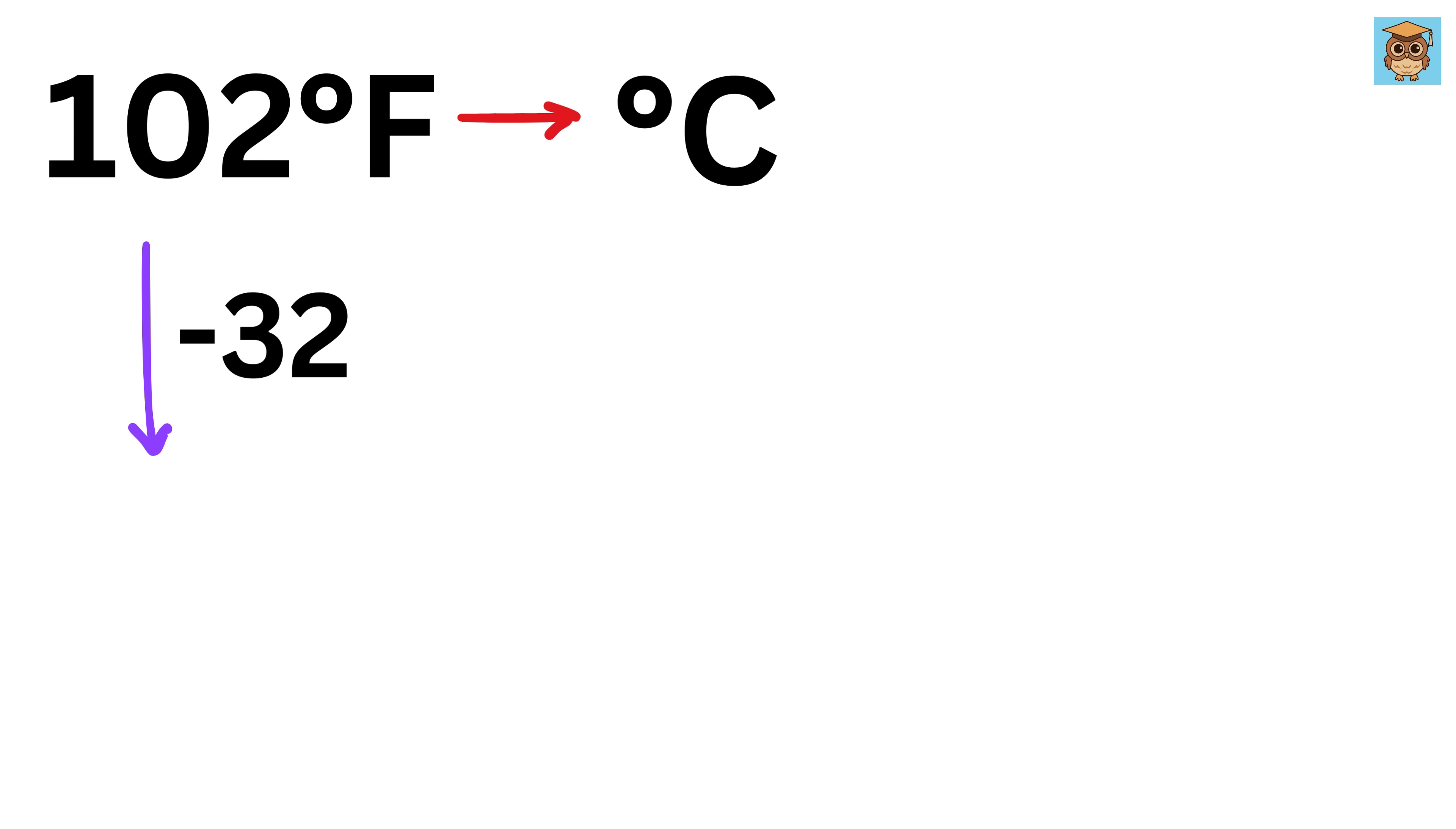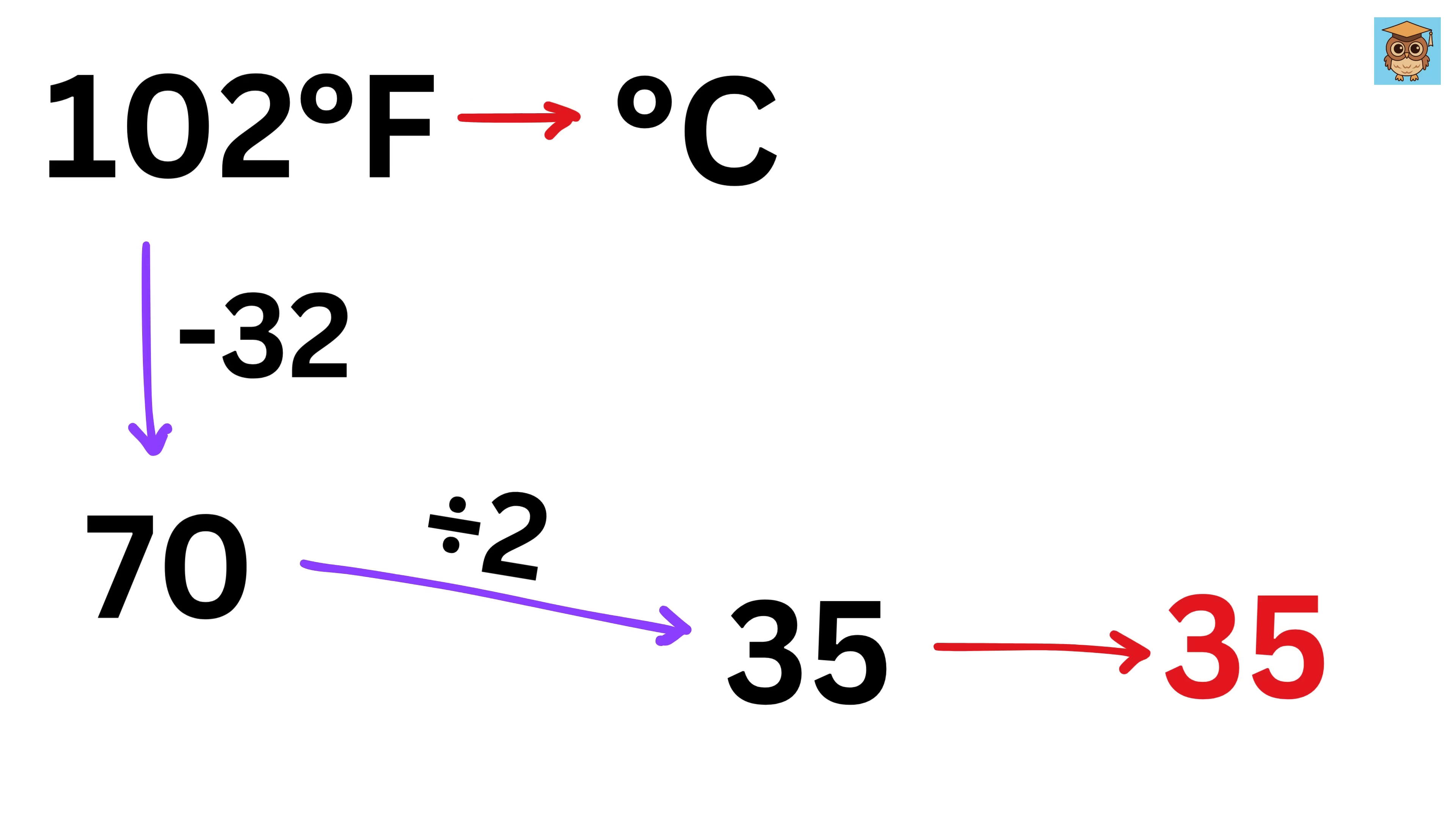First we will subtract 32 from this value, we get 70. Now divide it by 2 to get 35. First write 35 as it is this side, and here divide this 35 by 10 to write 3.5 here.